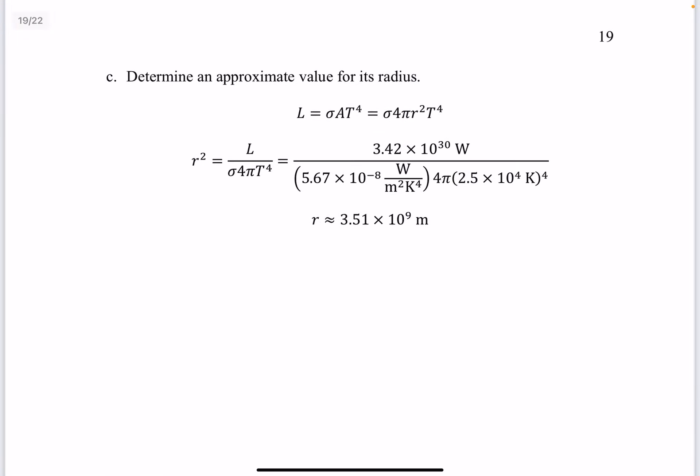Part c. Determine an approximate value for its radius. So remember from topic b, l equals sigma a t to the fourth. And a is 4 pi r squared. And just solve for r.